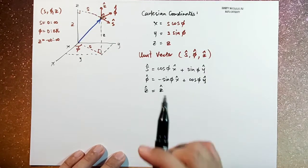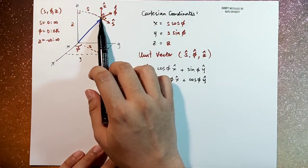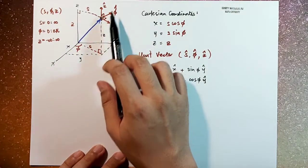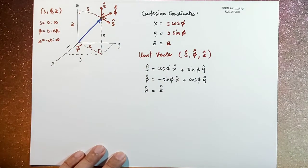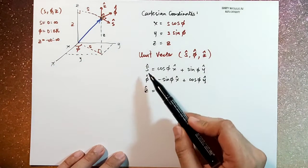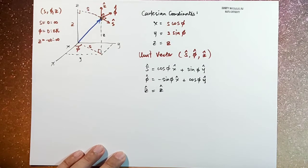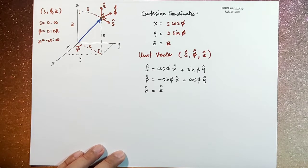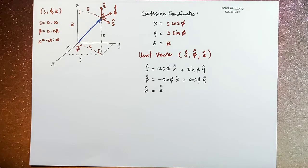On the other hand, as you change the position of your vector, of your points, so that means the direction of s hat and phi hat will also change accordingly. So that means s hat, phi hat are not constants, whereas z hat is a constant just like x hat, y hat, and y hat.